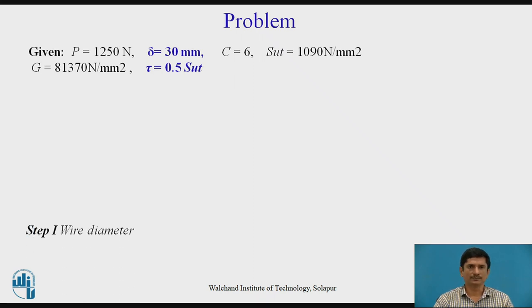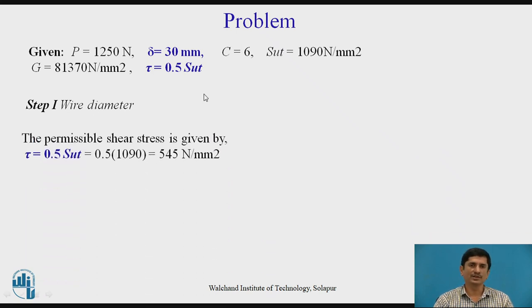Now, the first part, the wire diameter. Let us begin with the wire diameter. How to calculate this? The first step should be calculation of permissible shear stress. As we have the relation tau = 0.5 SUT and SUT is 1090, we get the value of the working shear stress as 545 Newton per mm square.